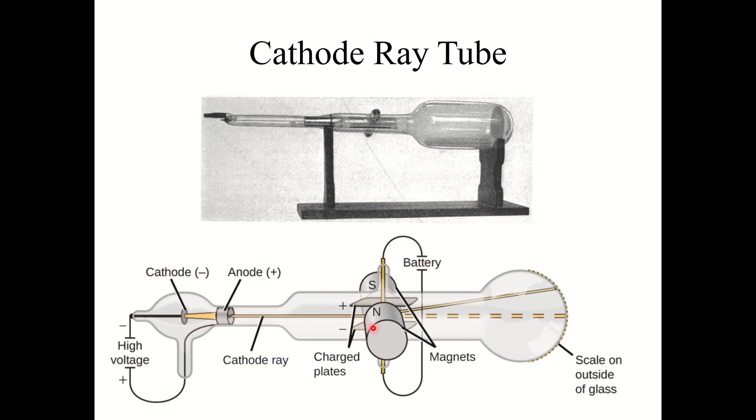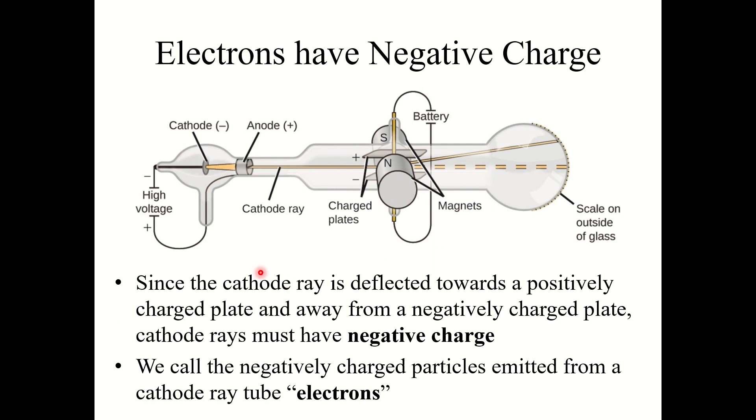It would bend away from the negative plate and it would bend towards the positive plate. So he found this to be very interesting. He concluded that since the cathode ray is deflected towards a positively charged plate and away from a negatively charged plate, cathode rays must have a negative charge. So he decided to call the negatively charged particles emitted from a cathode ray tube electrons.